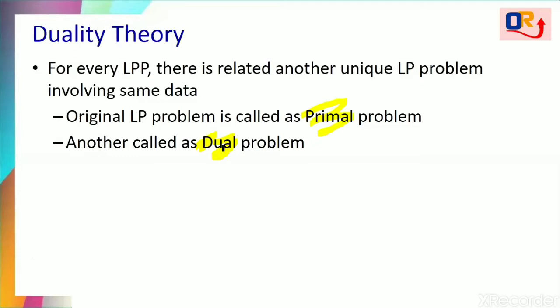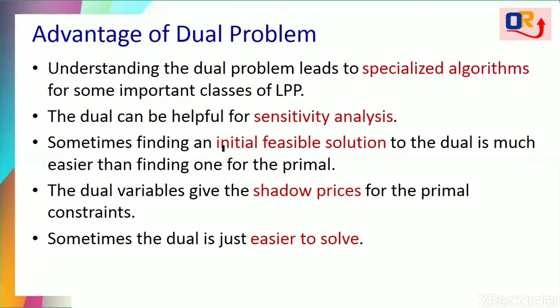For every problem — consider the simplex method — whatever is given at the beginning as a question forms the primal problem. For the primal problem there exists a dual problem. The advantage of the dual problem is that understanding it leads to specialized algorithms for some important classes of LPP. This will help us solve problems like the transportation simplex method and the Hungarian method, studied in modules 4 and 5.